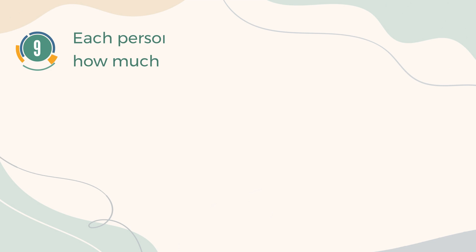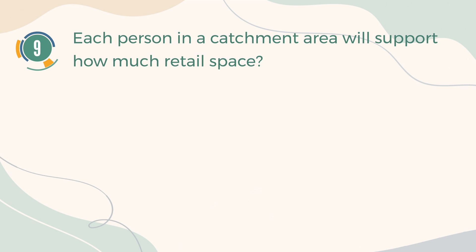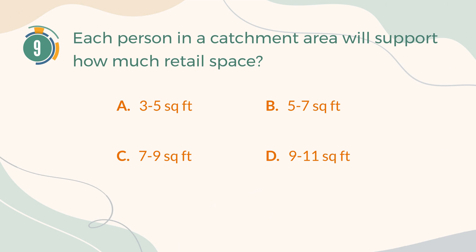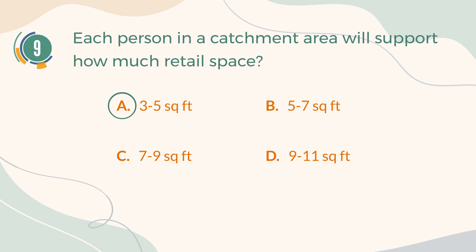Number 9. Each person in a catchment area will support how much retail space? A. 3 to 5 square feet. B. 5 to 7 square feet. C. 7 to 9 square feet. D. 9 to 11 square feet. The correct answer is A. 3 to 5 square feet.